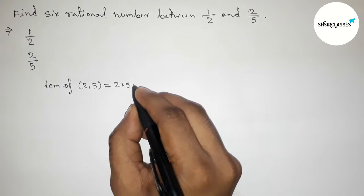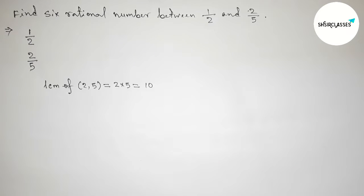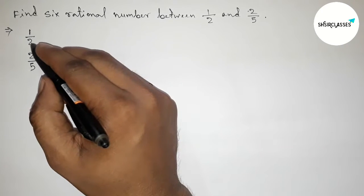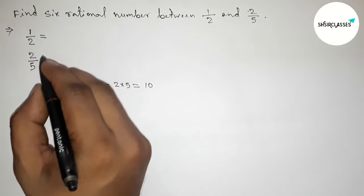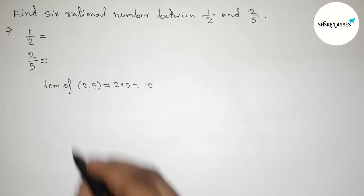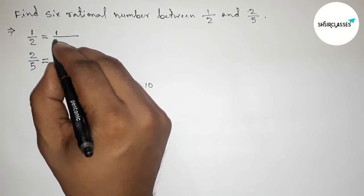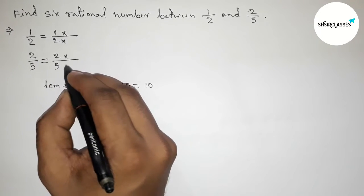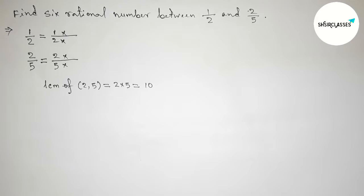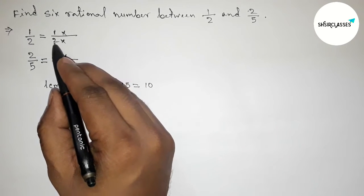Now we have to make both denominators 10. I am going to calculate here some important calculations. First write down 1/2 and take multiplication up and down. Similarly 2/5. First making the denominator 10.